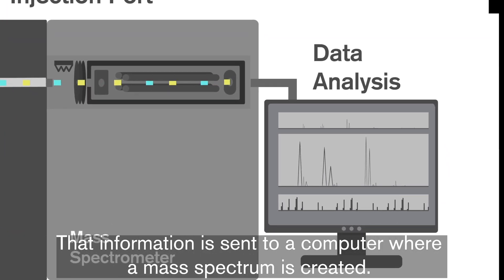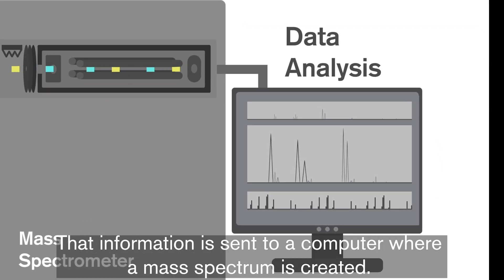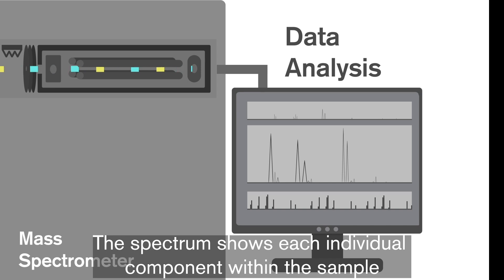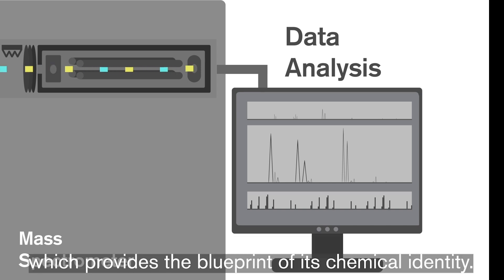That information is sent to a computer where a mass spectrum is created. The spectrum shows each individual component within the sample, which provides the blueprint of its chemical identity.